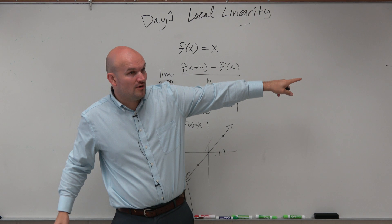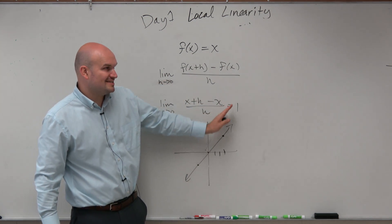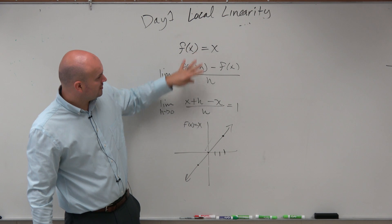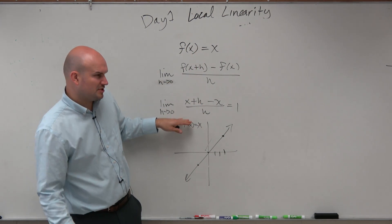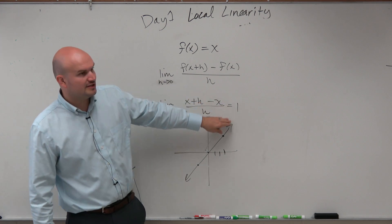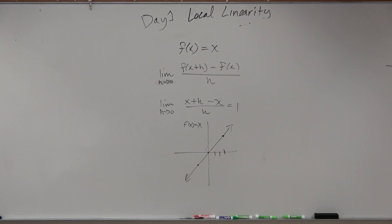It's constant. It's not like the one we did before. It's always the same. So the local linearity, using what we call the difference quotient, which I'll give you guys formal notes here later, is going to be equal to 1. So that's the basic of the most basic.